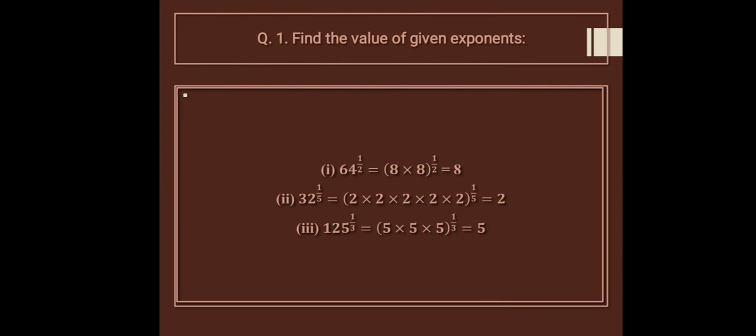Exponents mean power. 64 raised to the power 1 upon 2 — 1 upon 2 means half of the power. Now 64 means 8 into 8, so this is the square root of 64, so the square root of 64 is 8.